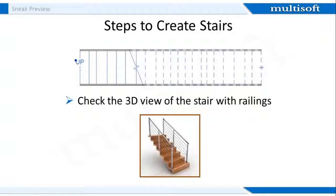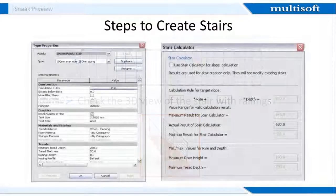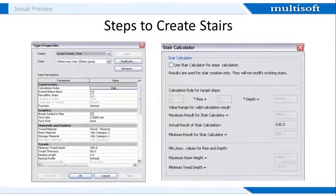After adding the risers, you can check the 3D view of the stair. You will notice that in the 3D view, Revit has automatically added the railings to the side of the stair so that we can have a better idea of how our stair will finally look. You can delete these railings if required. We can also customize the look of the stair — select the stairs and click on properties. You will see a vast array of parameters that can be customized to change the look and composition of the stairs.